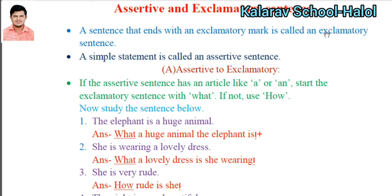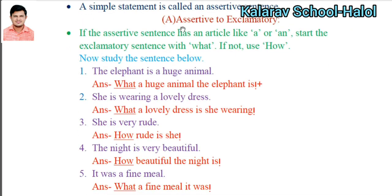A sentence that ends with an exclamatory mark is called an exclamatory sentence. We already studied about the types of sentences in English, so it is clear in our mind. A simple statement is called an assertive sentence.